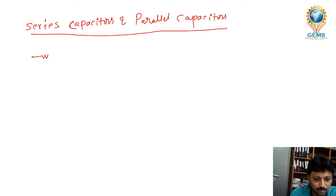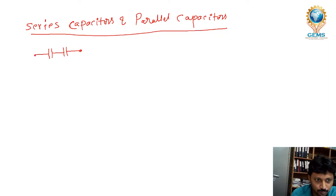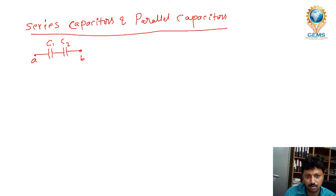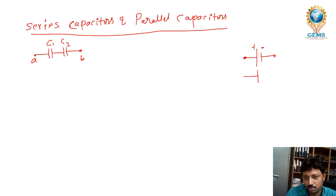Suppose I take two capacitors in series — this is A, this is B, this is C1 and this is C2. You have to remember two important things here. Many students are very careless about the symbols. The capacitor symbol has two plates that should be equal in size, whereas in a battery symbol one terminal is large and one is small.